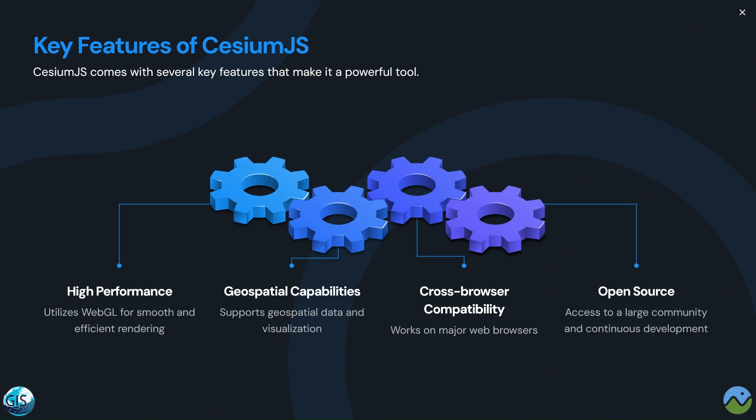What are the key features that make CesiumJS a powerful tool? The first one is high performance — using WebGL makes your application run smoothly and look great. Geospatial capability allows using geospatial data for advanced maps, useful in GIS, remote sensing, and photogrammetry. Cross-browser compatibility means your application will work on different web browsers without dependency on any type of device. And finally, being open source gives you access to a large community and continuous development.